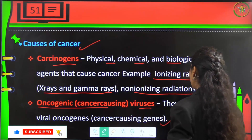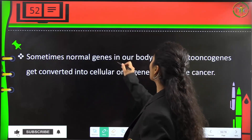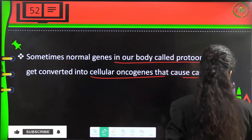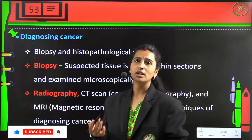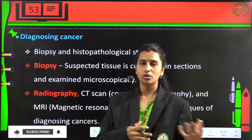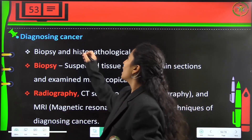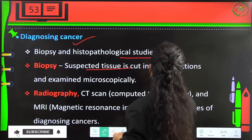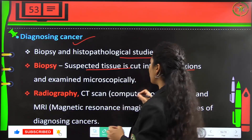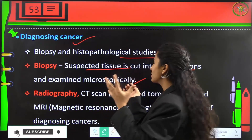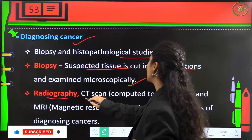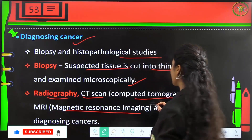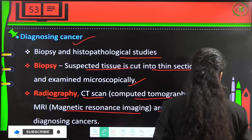Oncogenic, or cancer-causing viruses, have viral oncogenes. Sometimes normal genes in our body called proto-oncogenes convert into cellular oncogenes and cause cancer. Heredity may also be a factor. Diagnosing cancer involves biopsy and histopathological studies — suspected tissues are cut into thin sections and examined microscopically for tumour cells — and radiography including CT scans (computed tomography) and MRI (magnetic resonance imaging).